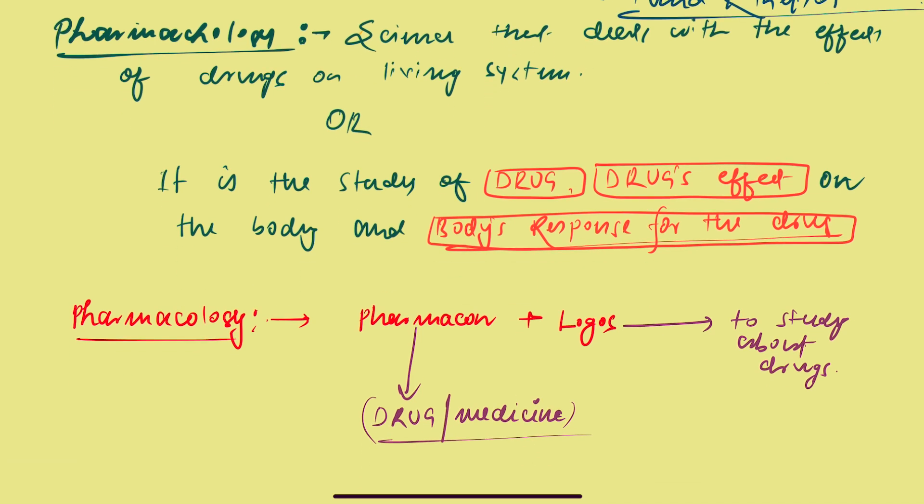So after ingestion of the drug, the question of what the drugs will do to the body and the body will do to the drugs are the two chains. These are the things or the dimensions that are coming under the pharmacology spectrum.